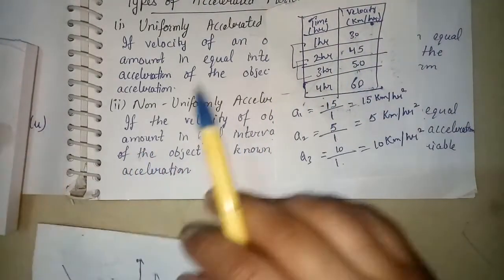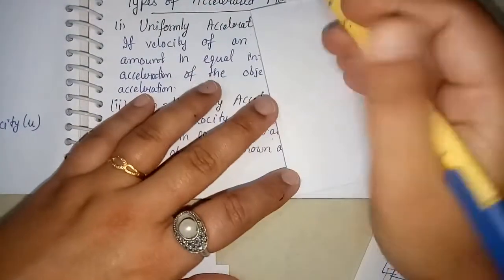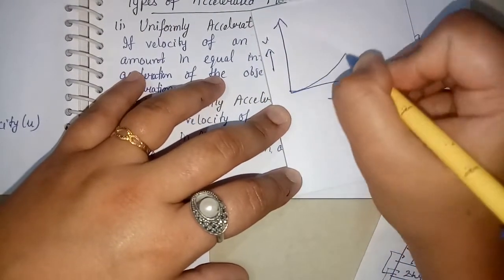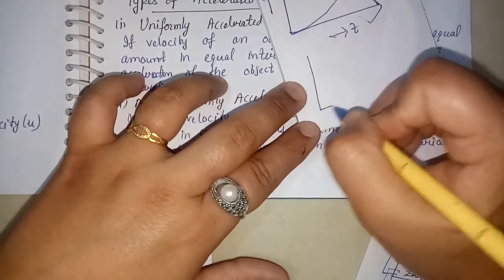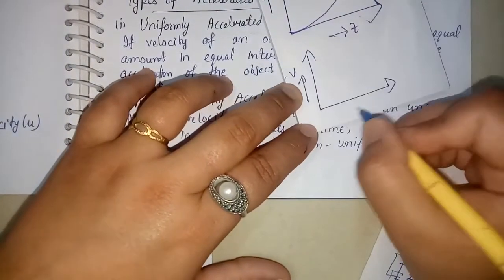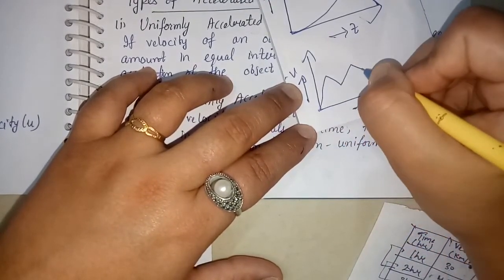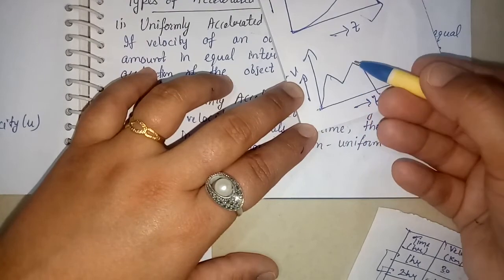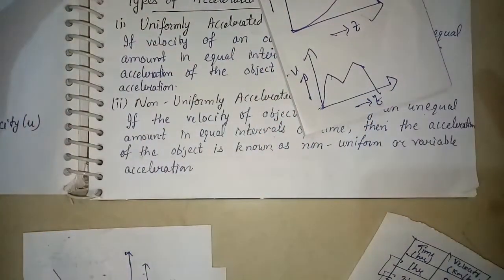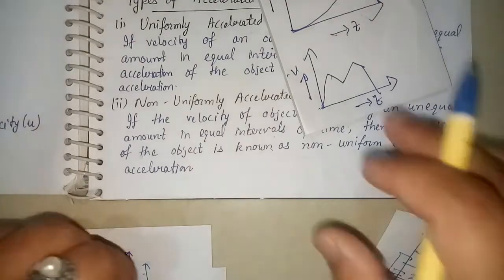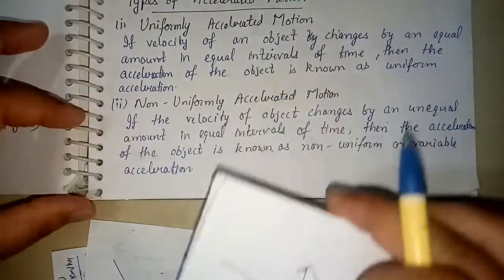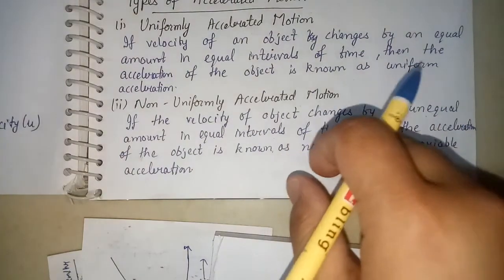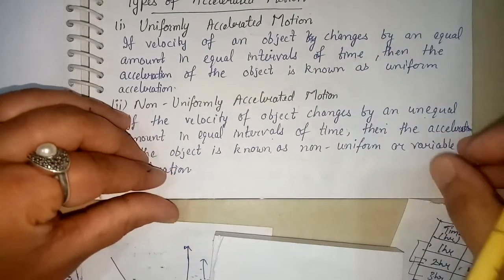When you make the velocity-time graph for non-uniform acceleration, it will be a curved shape — it can be any shape, not a straight line. So this is about the types of accelerated motion. We have talked about uniformly accelerated motion and non-uniformly accelerated motion. Thank you.